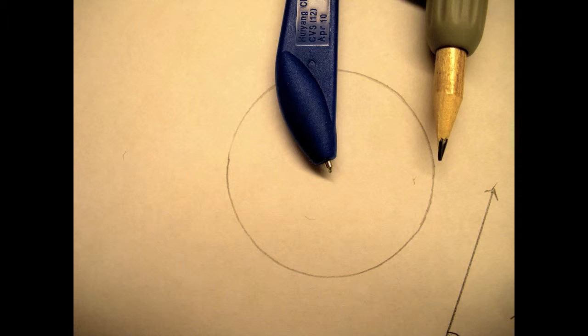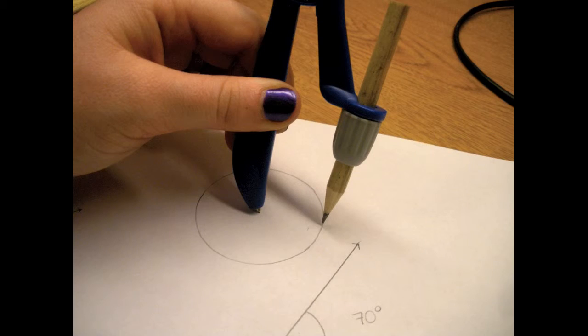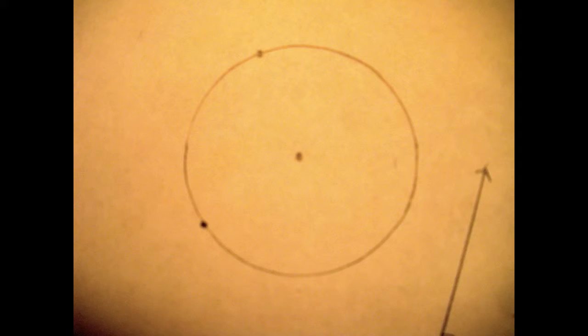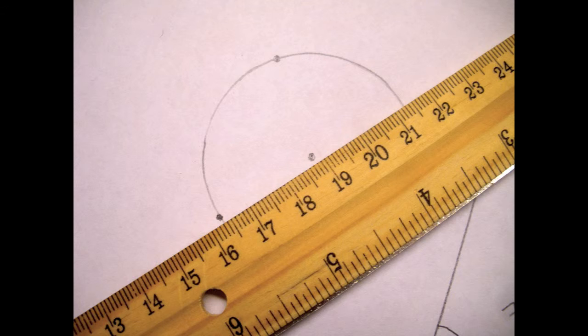With a compass we can make circles. And circles are helpful when making angles. This is a little bit advanced but you guys will learn more about this later on. Right now we are making an angle in the circle.